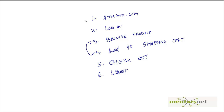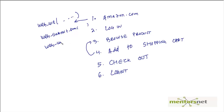In VuGen language, each transaction is essentially just an API. So basically, going to amazon.com is a web_url call with some parameters. Login is a web_submit_form where you provide your user ID and password. Similarly, browse product may be another web_url, and checkout may be another web_submit_form. Whatever scenario you are doing, the equivalent VuGen APIs are mapped here.